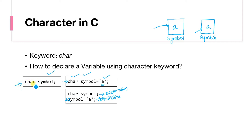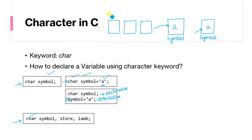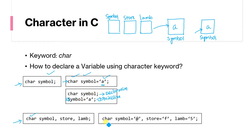It is also possible to declare multiple variables of character type. We can write: char symbol, store, lamp. These are three different variables of character type. The compiler will allocate three different spaces: one named symbol, one named store, and one named lamp. We can also initialize them in one line: char symbol = '@', store = 'f', lamp = '5'. All are treated as characters.